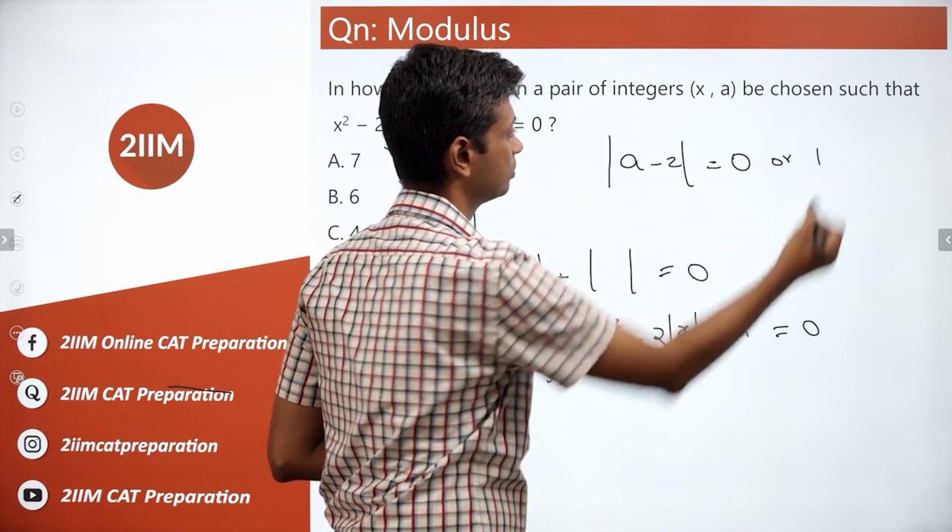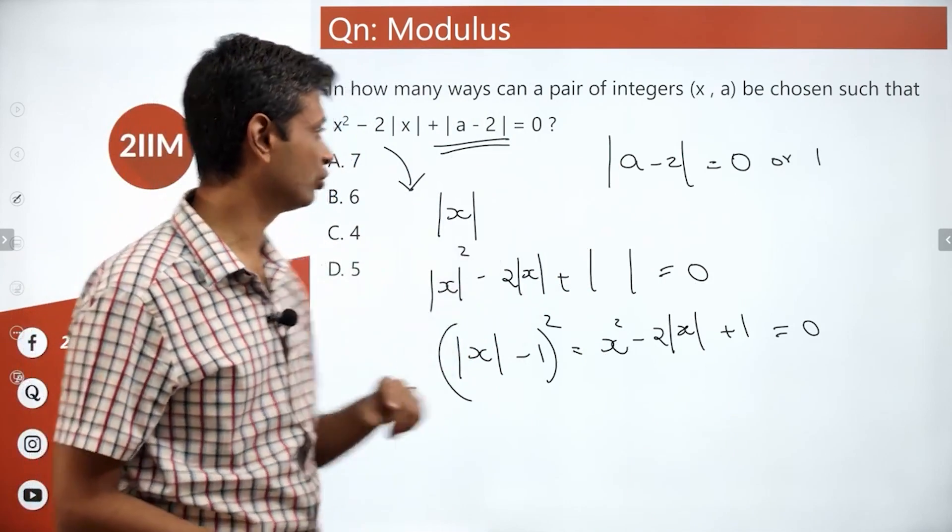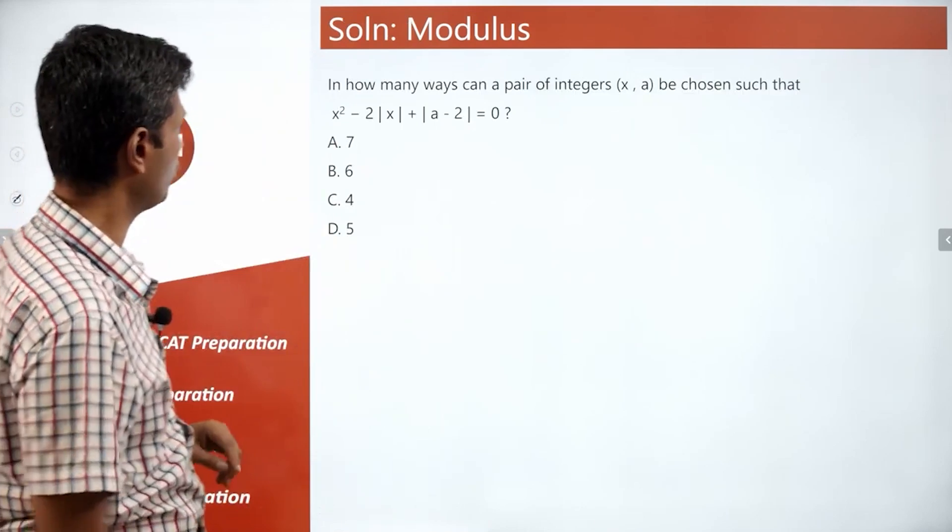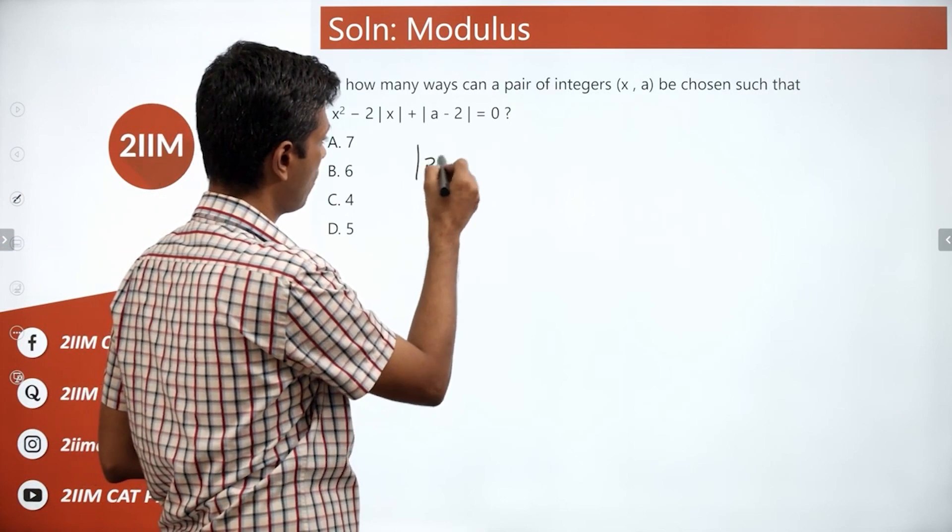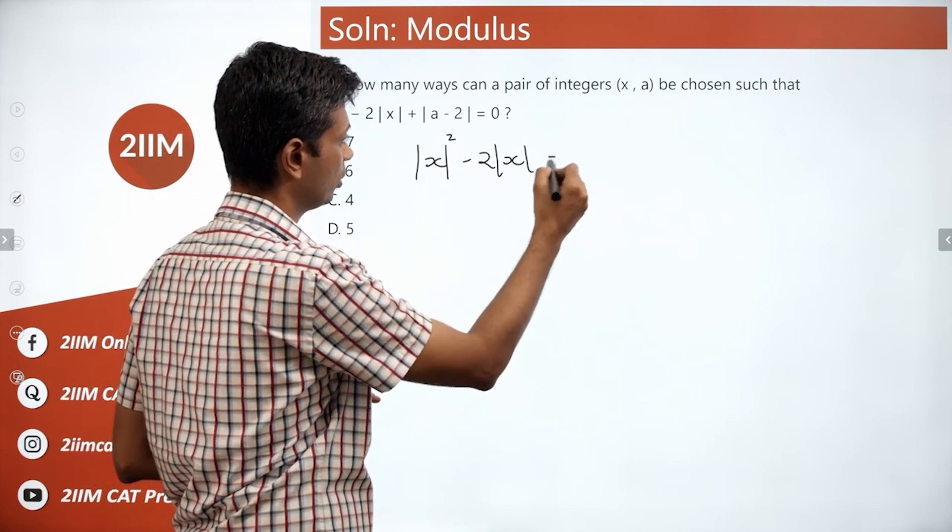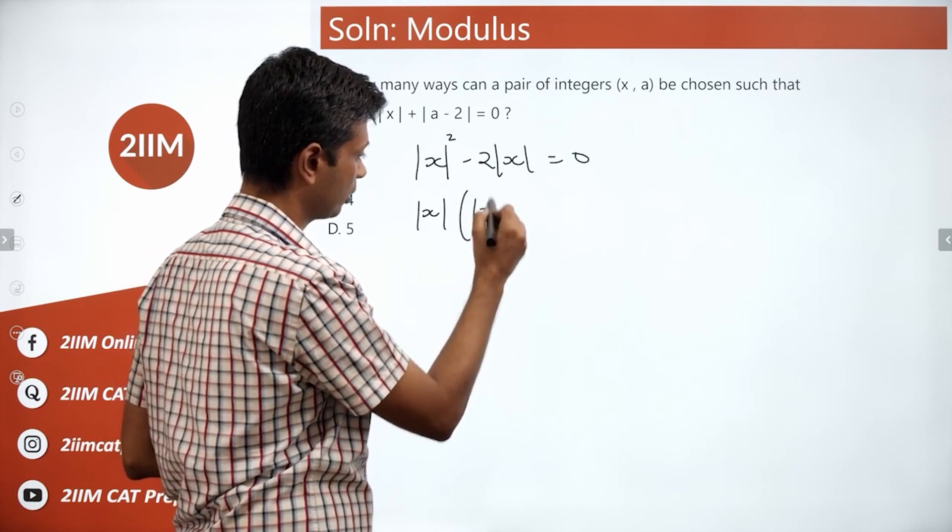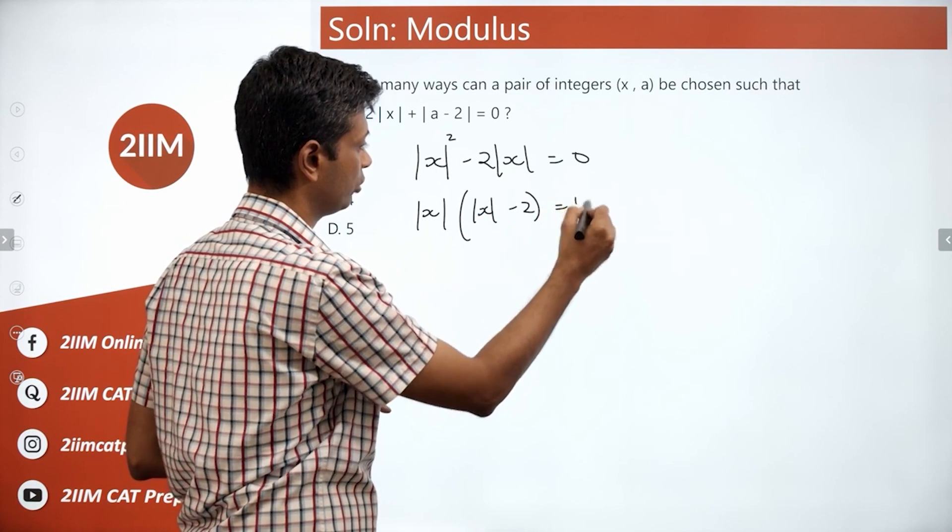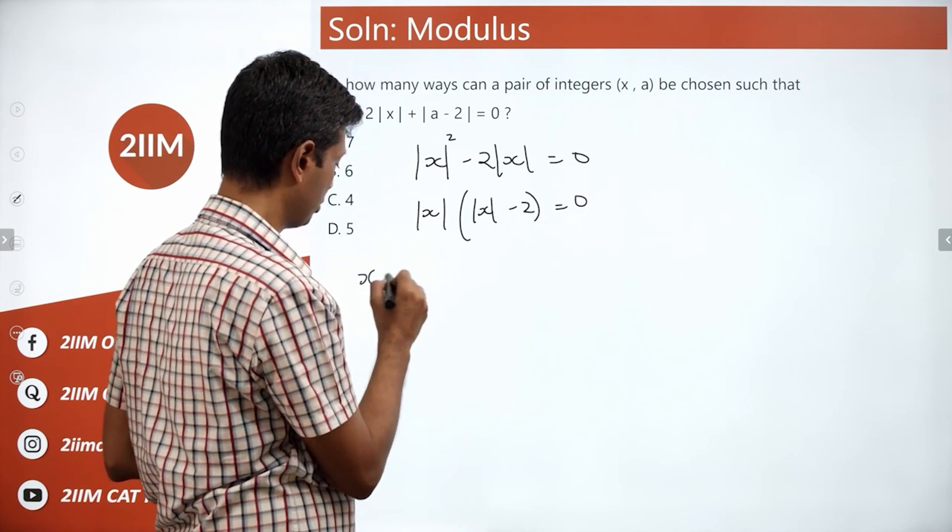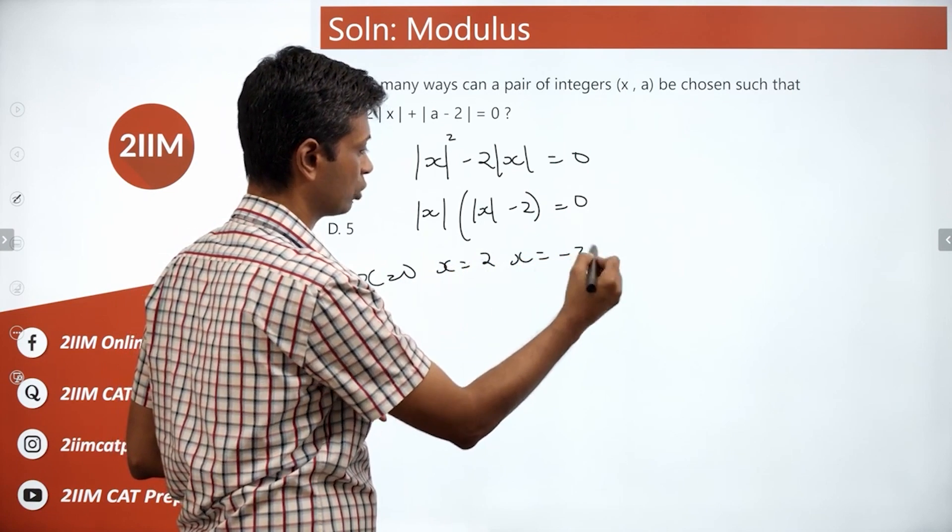I'm going to look at both possibilities. Let's say that's equal to 0. So now we have mod x the whole square minus 2 mod x is equal to 0. Mod x into mod x minus 2 equal to 0.